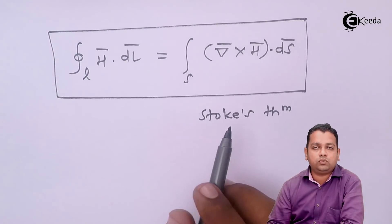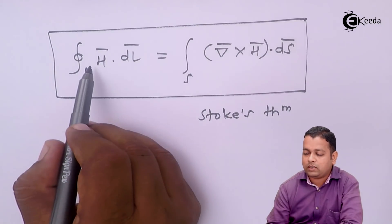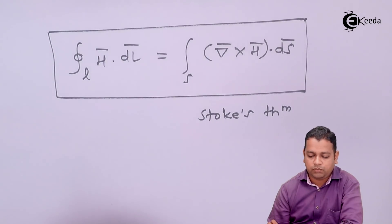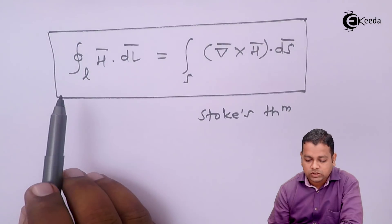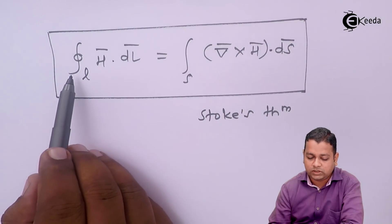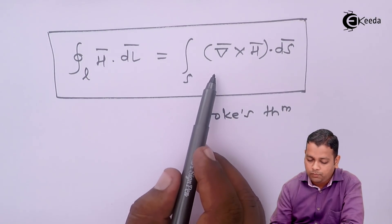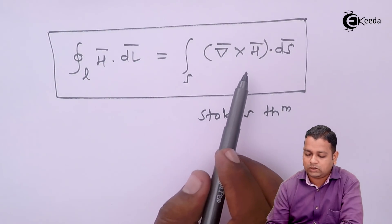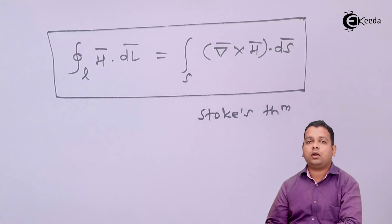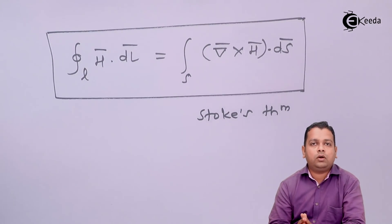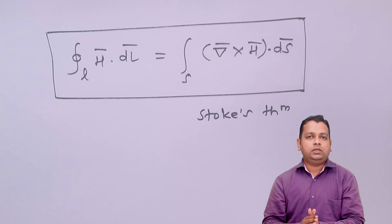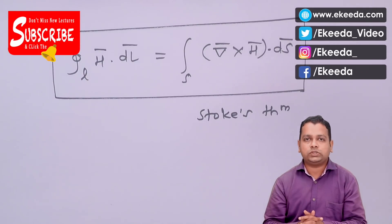Stokes' theorem was also introduced in the first chapter on vector analysis. Here H-bar is the magnetic field intensity. According to Stokes' theorem for the steady magnetic field, the integration of the tangential component of magnetic field intensity along a closed path equals the integration of the normal component of the curl of the same magnetic field intensity over the surface enclosed by that closed path. This completes the topic of curl and Stokes' theorem. In the next video we will solve three problems based on curl and Stokes' theorem.